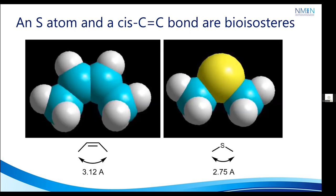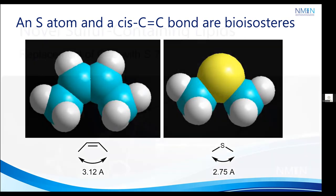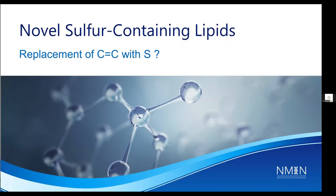Considering these drawbacks, the present work aims to determine whether a symmetrical placement of fatty chains may be beneficial. It is well known that sulfur atoms and cis carbon-carbon double bonds are bioisosters. As a result, with the replacement of carbon-carbon double bonds with sulfur atoms, novel sulfur-containing lipids were designed.